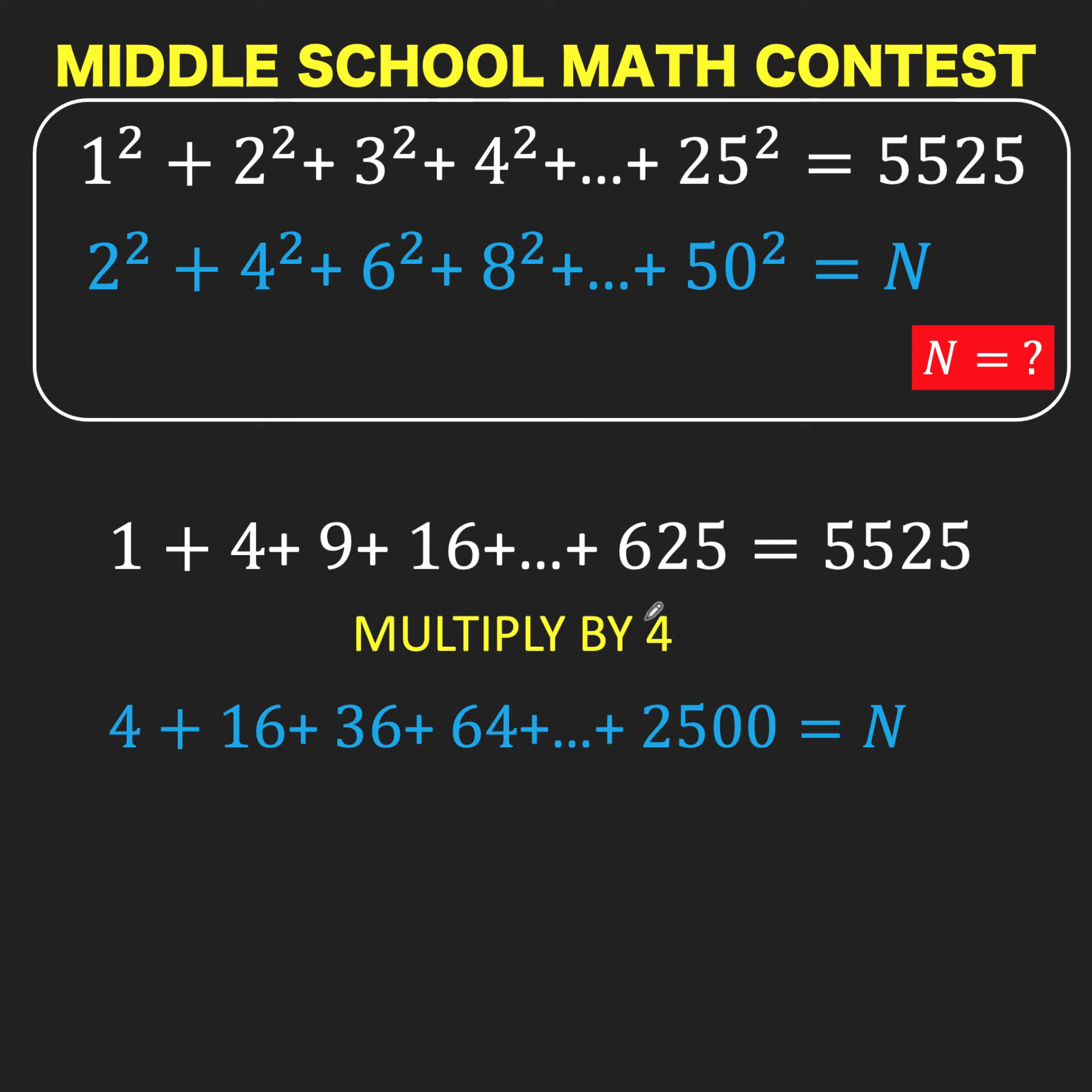Therefore, if that is the pattern, we can now find the value of N by simply multiplying 5,525 by 4.